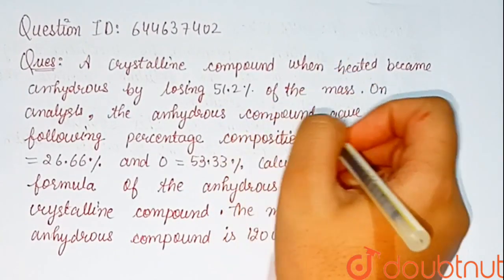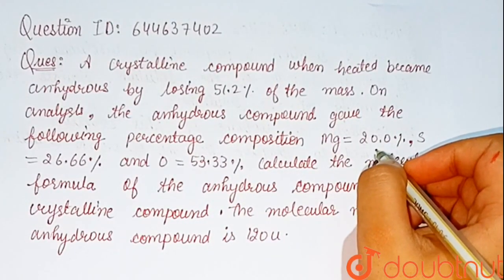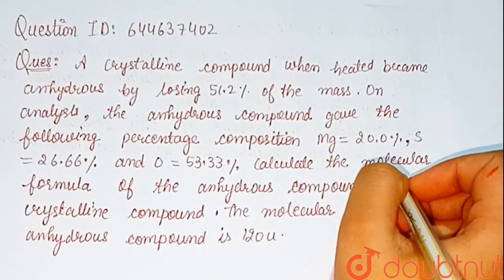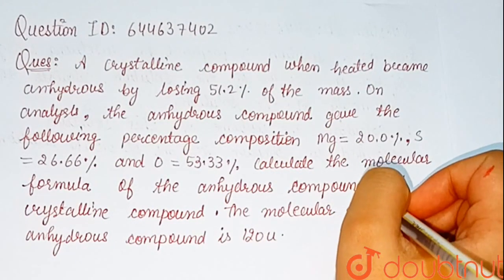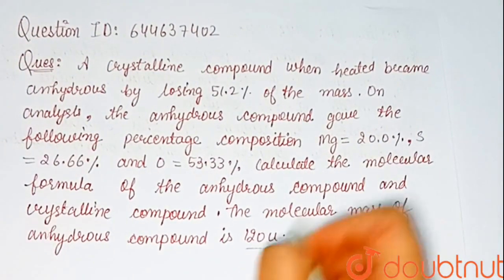On analysis, the anhydrous compound gave the following percentage composition: magnesium equal to 20%, sulfur equal to 26.66%, oxygen equal to 53.33%. Calculate the molecular formula of anhydrous compound and crystalline compound. The molecular mass of anhydrous compound is 120U.